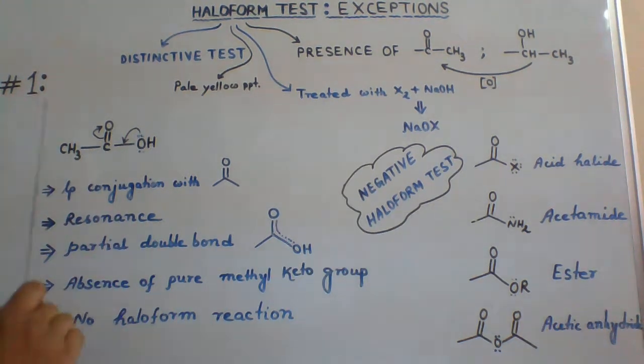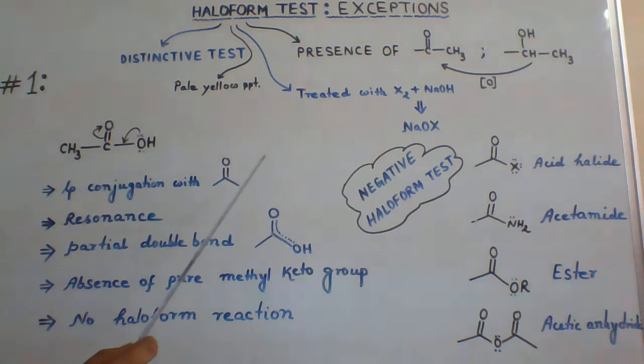Let's take the first exception. Carboxylic acid and its derivatives do not give positive haloform test. Let's take the simplest carboxylic acid, ethanoic acid or acetic acid.